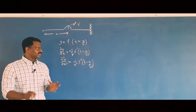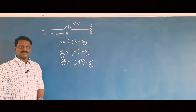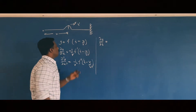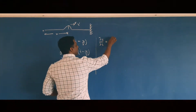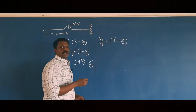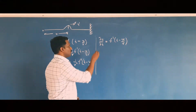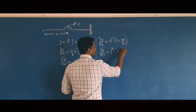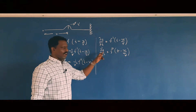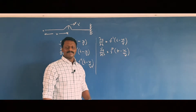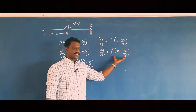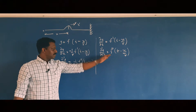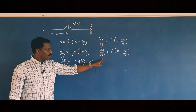Now let us differentiate the same equation with respect to t. The partial derivative ∂y/∂t = f′(t − x/v), and differentiating again, ∂²y/∂t² = f″(t − x/v). We have the same f″(t − x/v) term here, so we will replace this term with ∂²y/∂t².